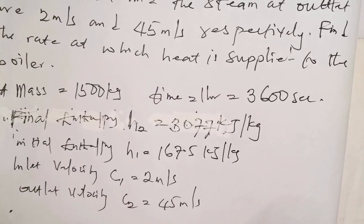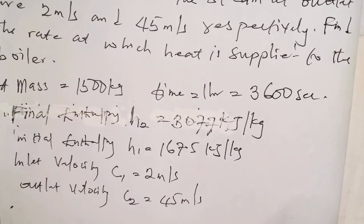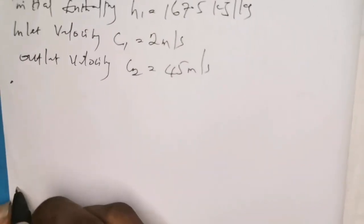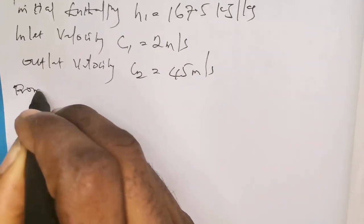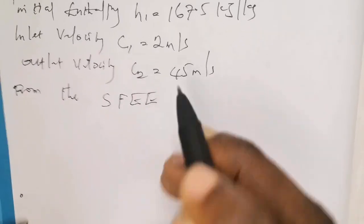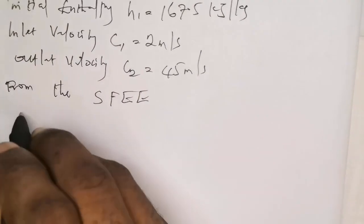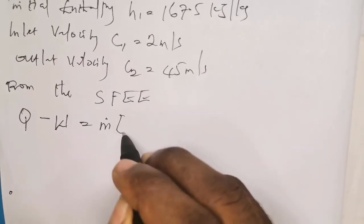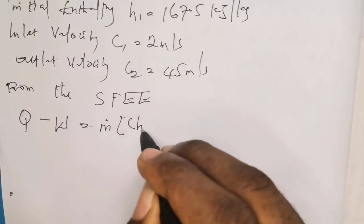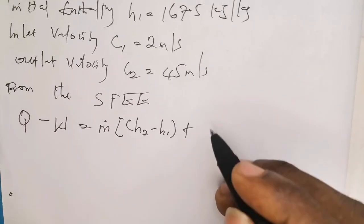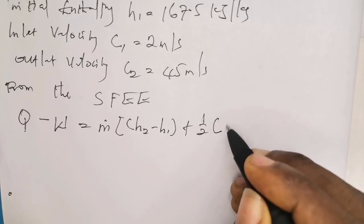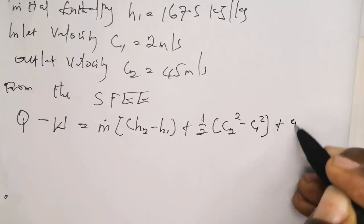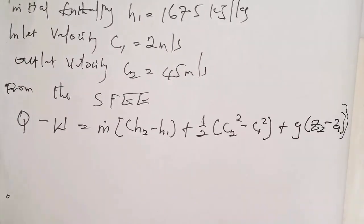This problem is under the application of steady flow energy equations. From the steady flow energy equation (SFEE), we have that the heat supplied to a boiler minus the work done is equal to the mass flow rate multiplied by the change in enthalpy (H2 minus H1), plus the change in kinetic energy per unit mass (½(C2² - C1²)), plus the change in potential energy per unit mass (g(Z2 - Z1)).